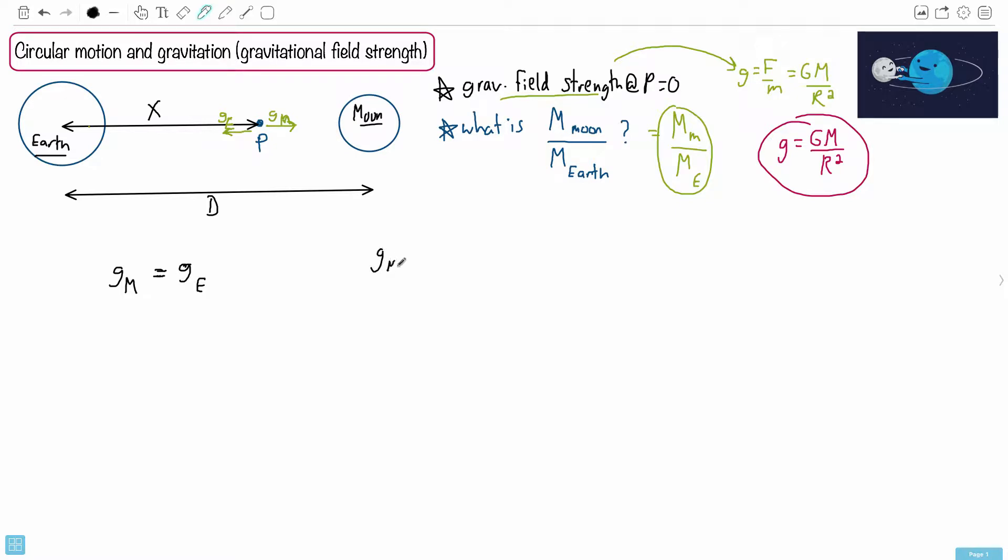So G of the Moon. Well, it would be capital G, this constant of the universe, times M Moon over the distance to the Moon. How would you define the distance from P to the Moon?